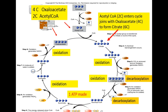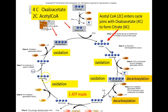Succinyl coenzyme A is a high-energy compound used to make one ATP — this is the step where an ADP molecule is phosphorylated to make ATP. The remainder, succinate, is oxidized one more time; however, the electron carrier here is not NAD+ but rather FAD, which picks up a hydrogen atom producing FADH2.